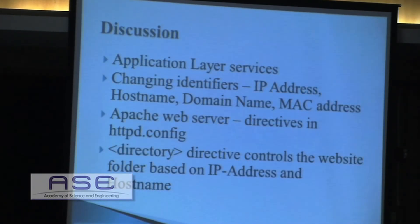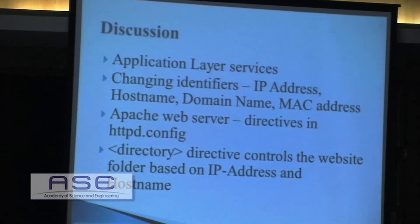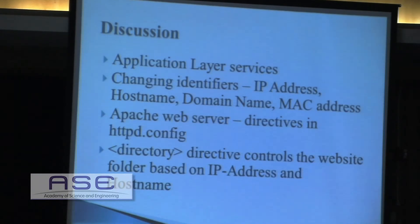The IDS and IPS rules discussed operate at the system level, but there are also problems at the application layer. We use identifiers like IP address, hostname, domain name, and MAC address for web services. For example, Apache web server's HTTP config is a plain file with directives. If you have a directory directive, access control to that directory is based on IP address or hostname. After migration, the changed identifier completely blocks access to that specific directory. Similarly, Apache virtual hosting — where multiple web pages are served from one server based on IP address and hostname — will lose access to those web pages if the IP address and hostname change after migration.